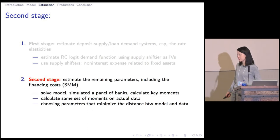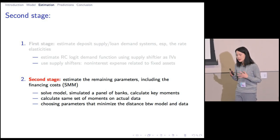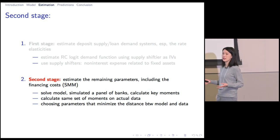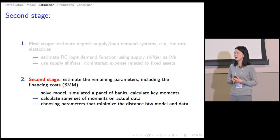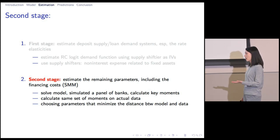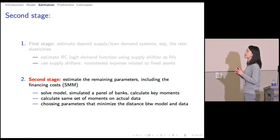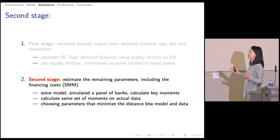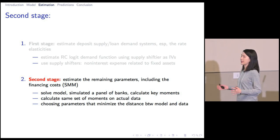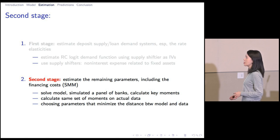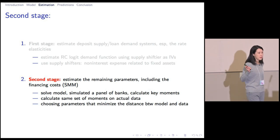Next, we move to the second stage, where we estimate the remaining parameters in the model, including the financing cost — the parameters governing the bank's intertemporal decisions. We estimate their value using simulated method of moments. We start with some conjectured parameters, solve the model, and simulate a panel of banks. Based on the simulated data, we calculate important moments, do the same with actual data, and choose our parameters to minimize the distance between model and data. That's how we get our second-stage estimates.